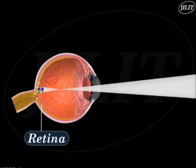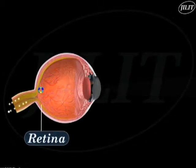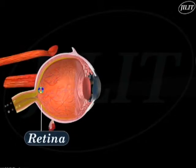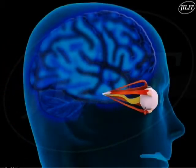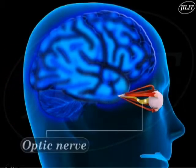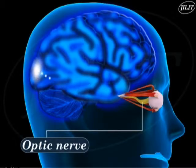From the nerve fibers present on the retina, these signals are sent to a nerve bundle that comes out of the back of the eye in the form of the optic nerve. The optic nerve sends the signal to the visual center present at the back of the brain.